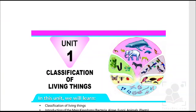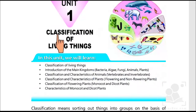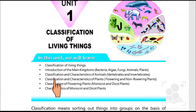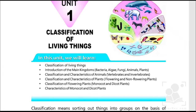Hi kids, in today's video we are going to start with unit number one which is classification of living things. In this unit we'll learn about classification, introduction of the main kingdoms, classification and characteristics of animals and other things. So let's start.